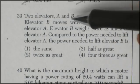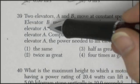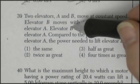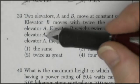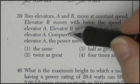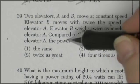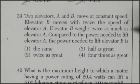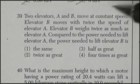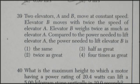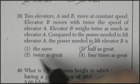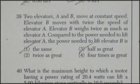Elevator B moves with twice the speed of elevator A. Elevator B weighs twice as much as elevator A. Compared to the power needed to lift elevator A, the power needed to lift elevator B is. Compared to A, B's got to be greater. Well, that's just weirdly worded.